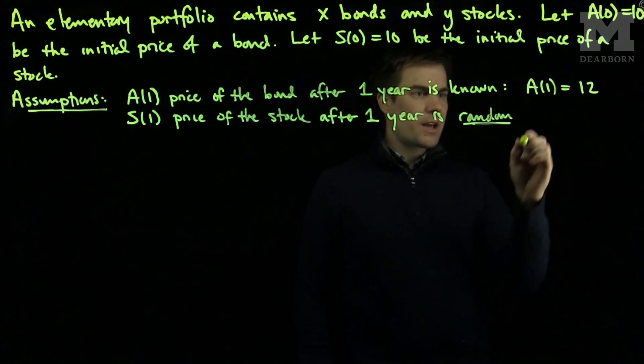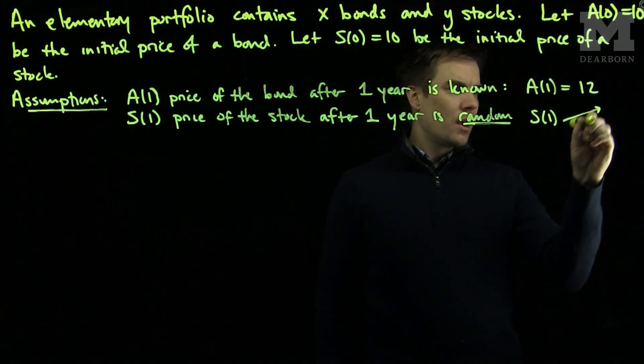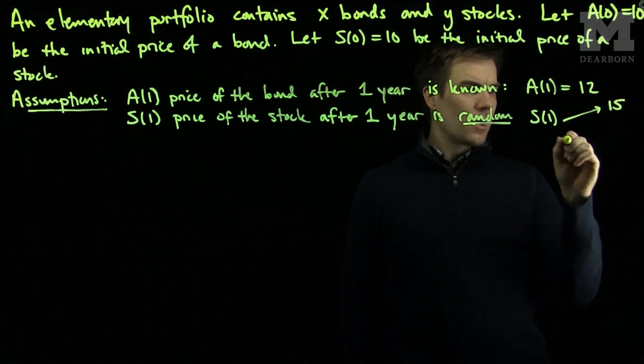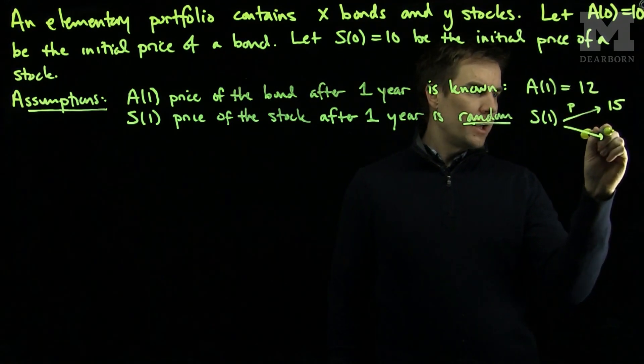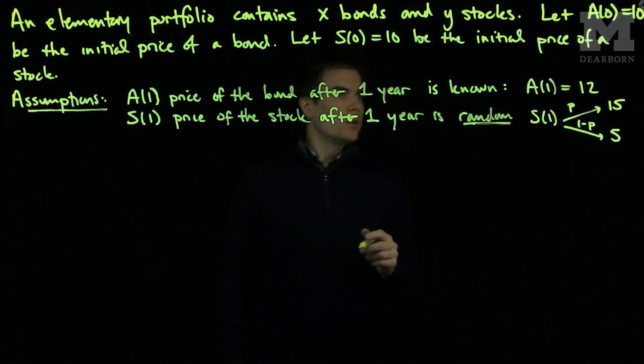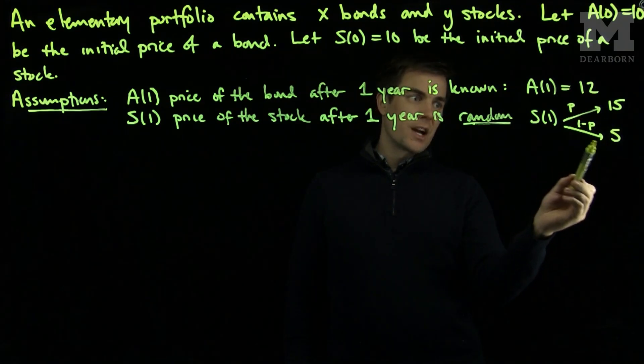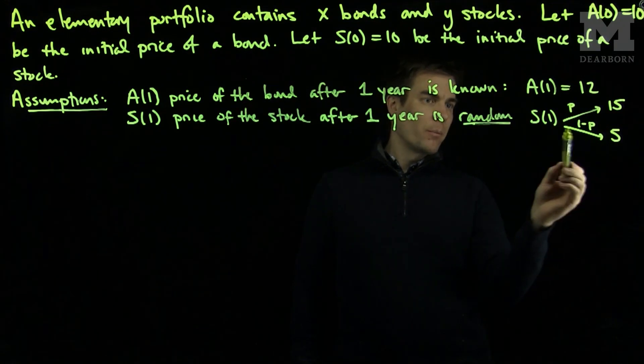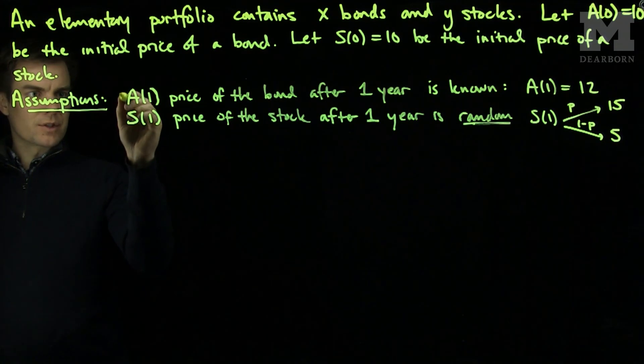So what will happen is we will say that S(1), the stock price at time 1, will be 15 with probability P, or it will be 5 with probability 1 minus P. So we have the situation where the stock price will go up by 50% and the situation where the stock price will go down by 50%. We have a boom probability and a bust probability.